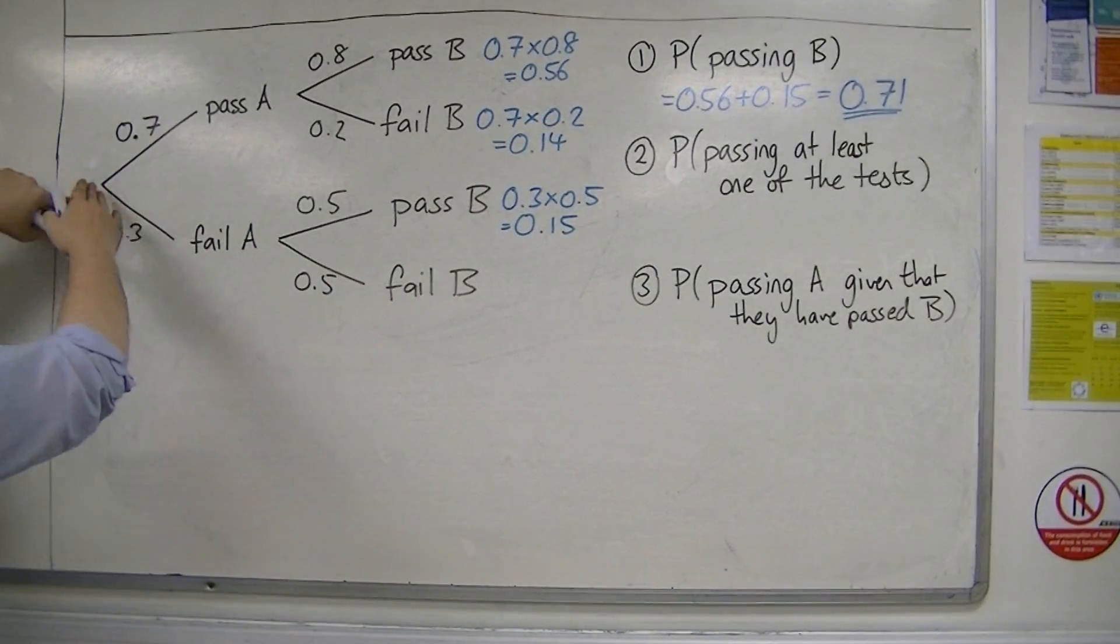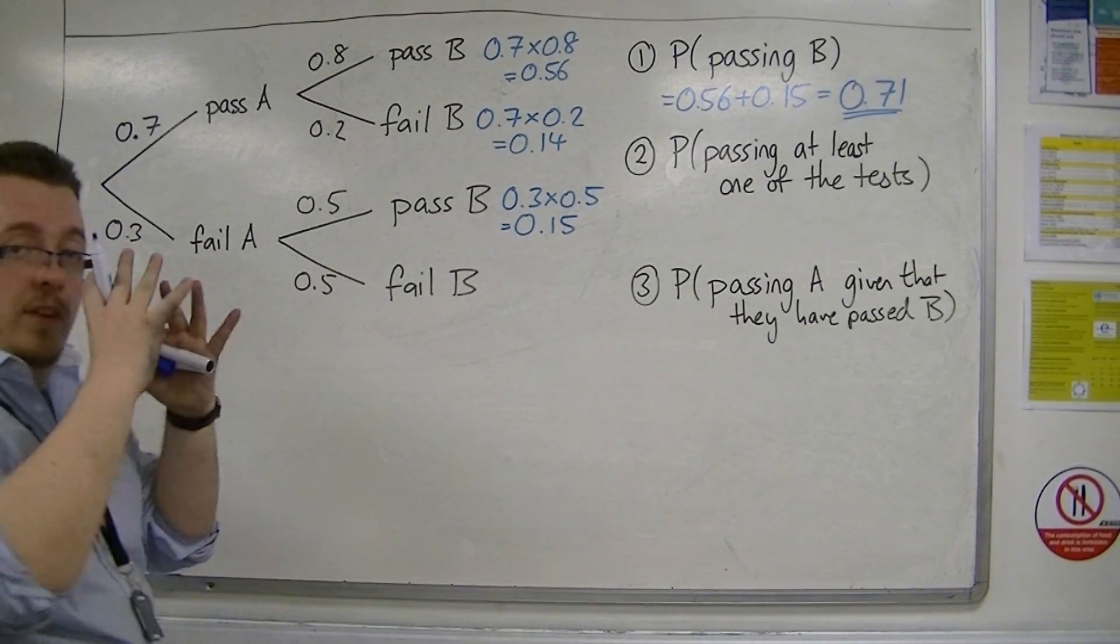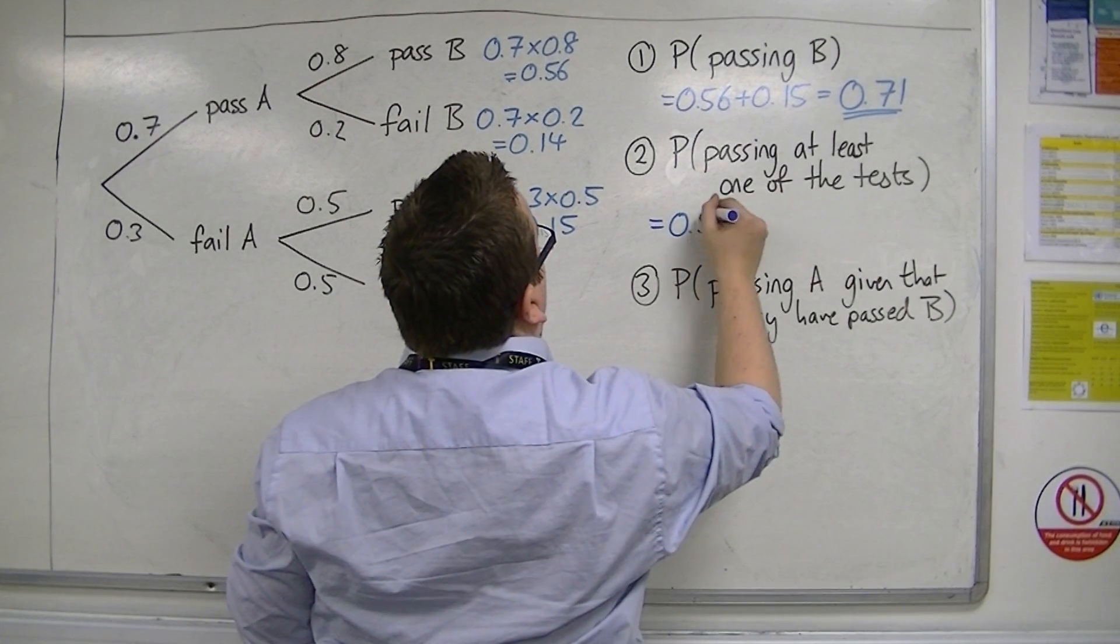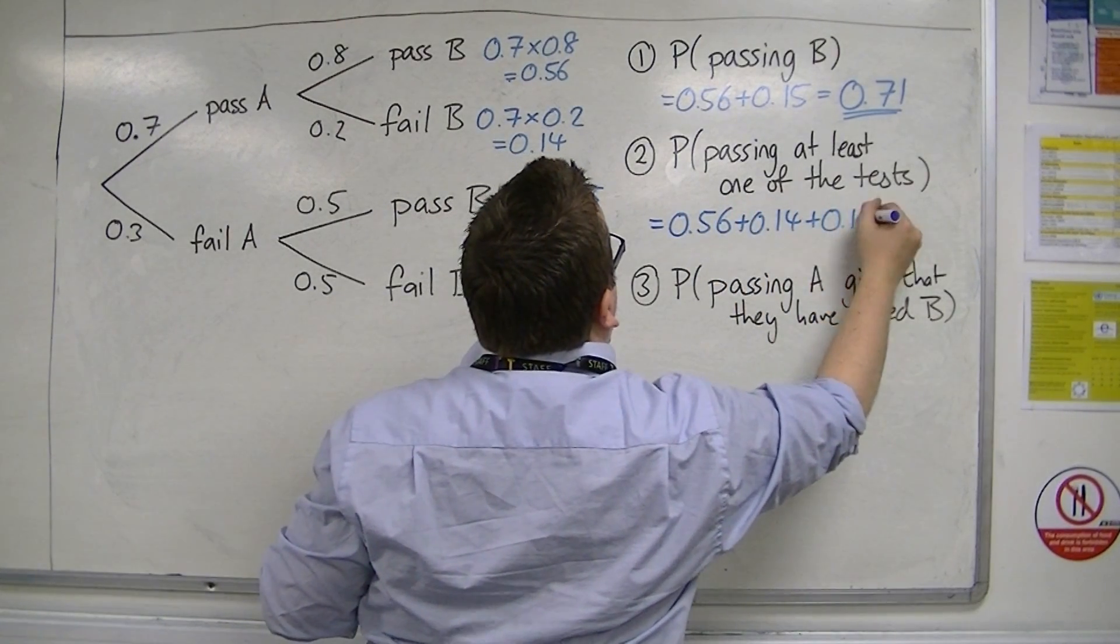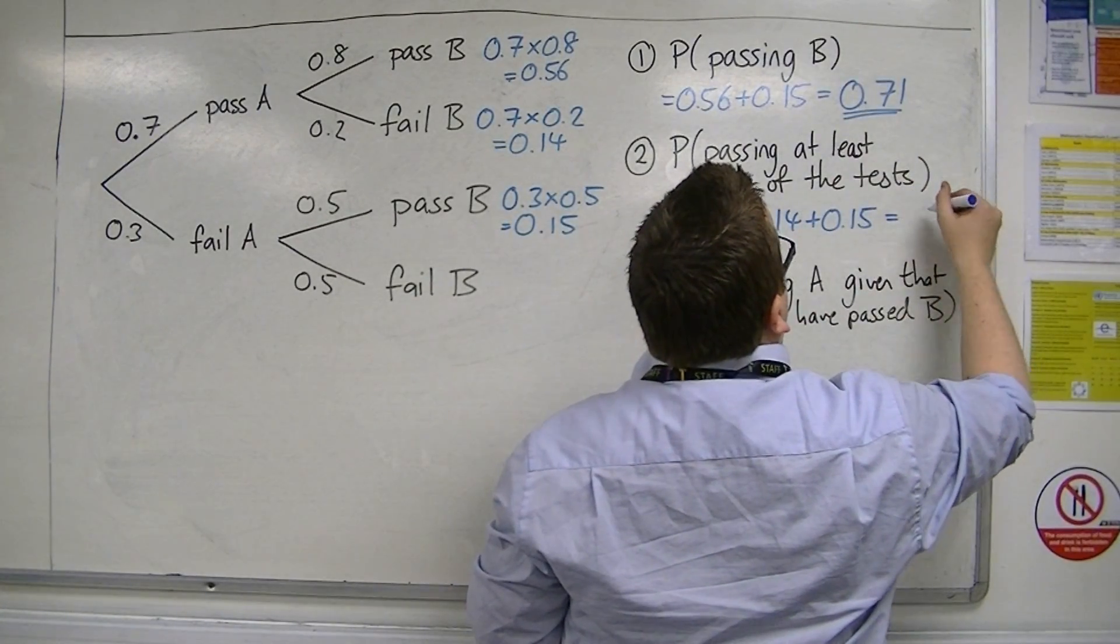Or he could fail A and pass B. So it is the sum of these three probabilities: 0.56 plus 0.14 plus 0.15, which equals 0.85.